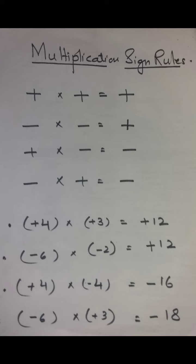Plus 4 multiply by minus 4 — answer is in minus sign, 4 times 4 is minus 16. Minus 6 multiply by plus 3 — answer is in minus sign, 6 times 3 is 18, so minus 18.